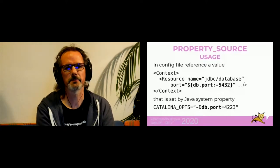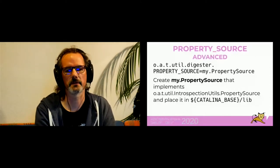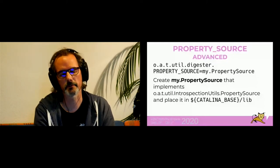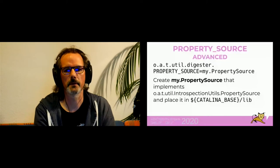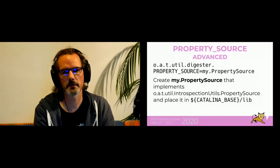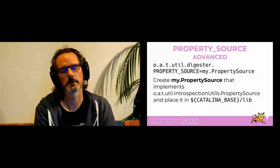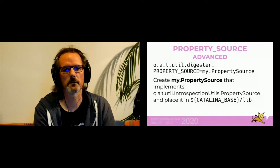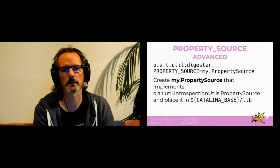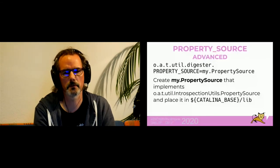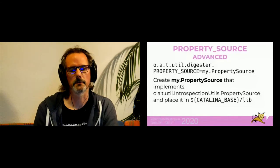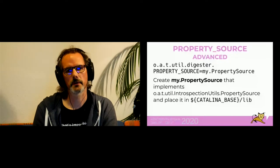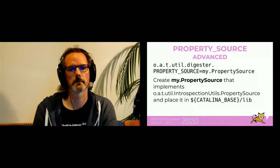If the property sources available inside Tomcat's default installation — system properties or the environment replacer — aren't sufficient, you can provide your own property source. For that you have to implement the property source interface and put the classes inside the shared loader, common loader, or class path — wherever you want so that Tomcat can find it. I've usually put it into the CATALINA_BASE lib folder, which is the common loader. After that, you have to define the property source system property to point to the fully qualified class name of your implementation.